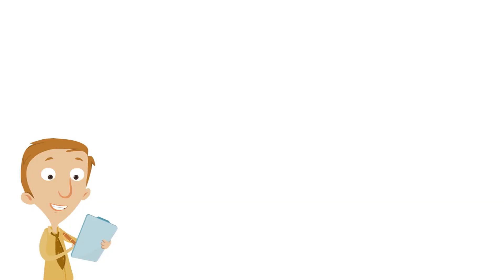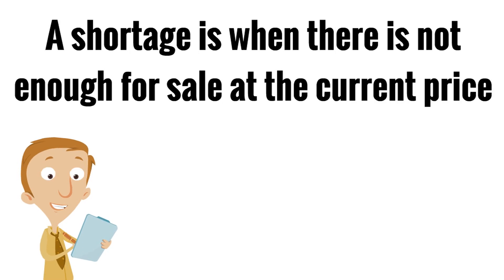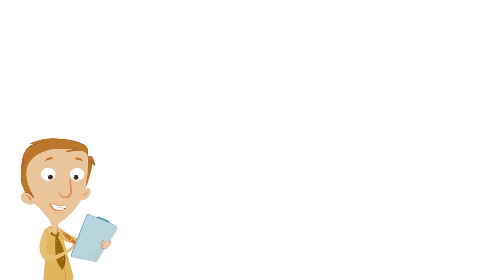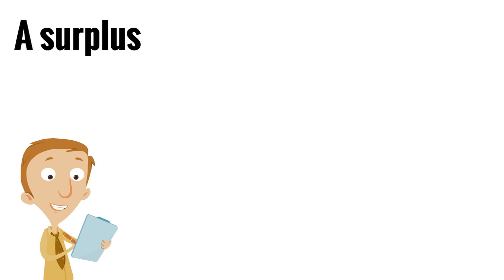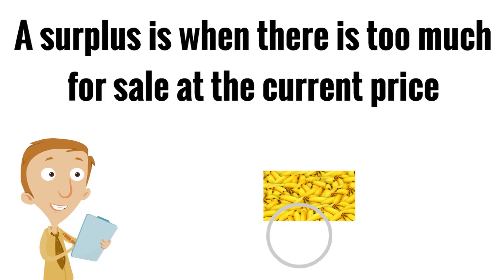A shortage is when there is not enough for sale at the current price — like these empty shelves, this is a shortage. But a surplus is the exact opposite: a surplus is when there is too much for sale at the current price.